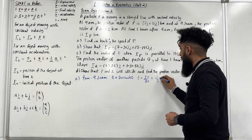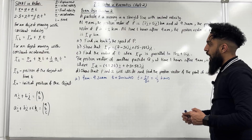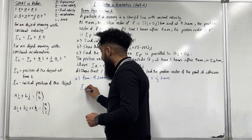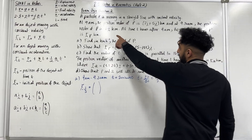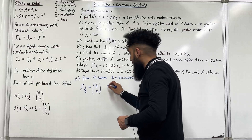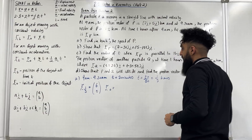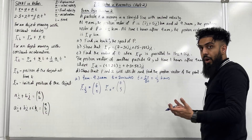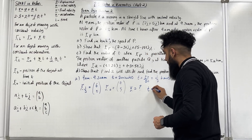The position of the particle after one third of an hour is (6i), written as column vector (6, 0). The initial position R₀ is (7i + 5j), written as (7, 5). We don't know the velocity vector. After one third of an hour, T = 1/3. To find the speed, we first need to work out the velocity vector.